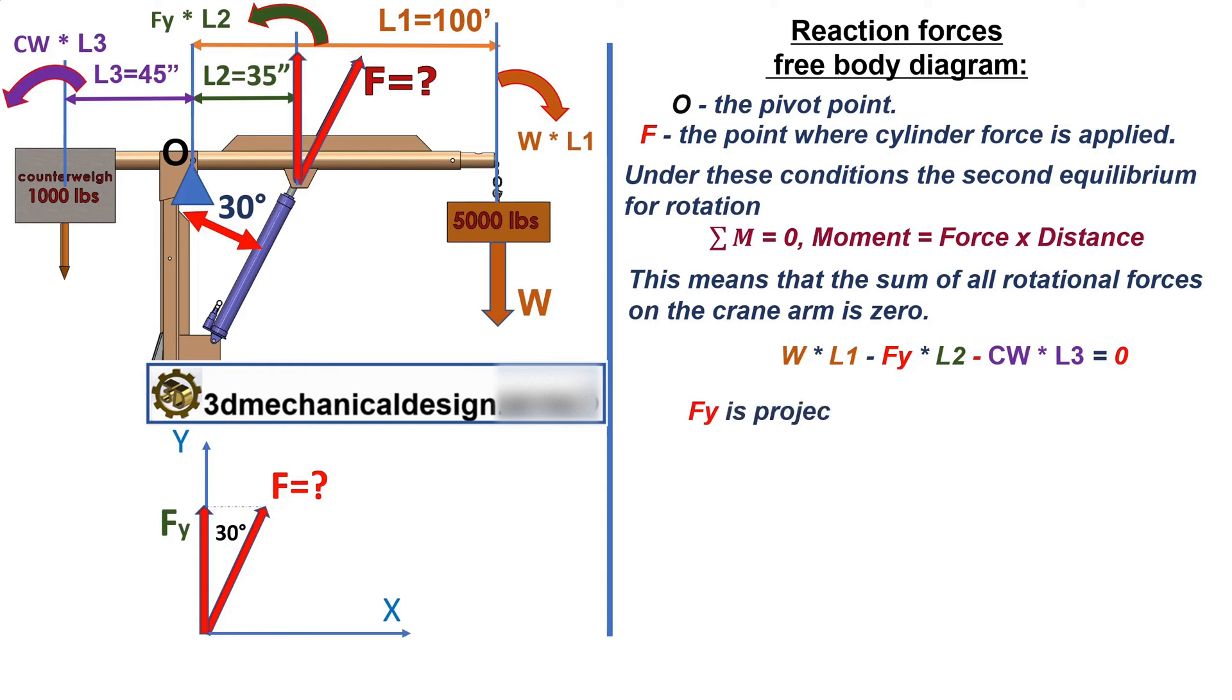Fy is projection of the force F on the axis Y. 100 times 5000 minus 45 times 1000 equals Fy times 35.